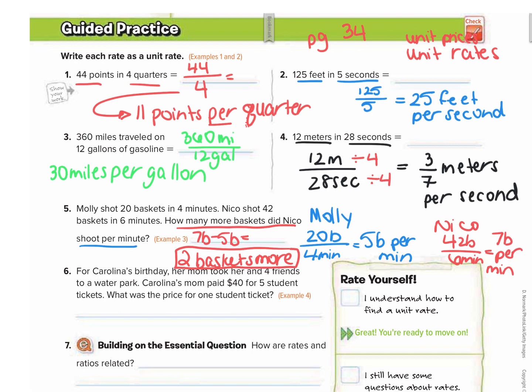Number six, for Carolina's birthday, her mom took her and four friends to a water park. Carolina's mom paid $40 for five student tickets. What was the price for one student ticket? So this one, we're finding the unit price. This one is unit price because we're working with money. So $40 per five tickets is $8 per student ticket would be the unit price.